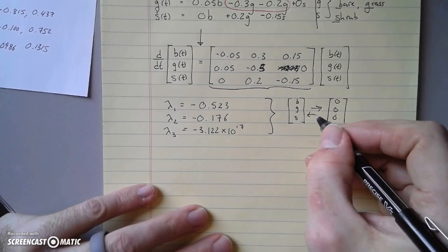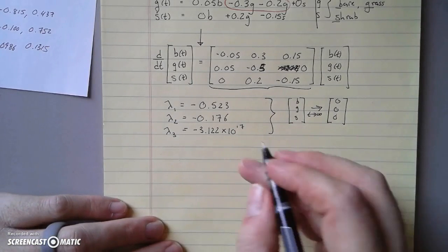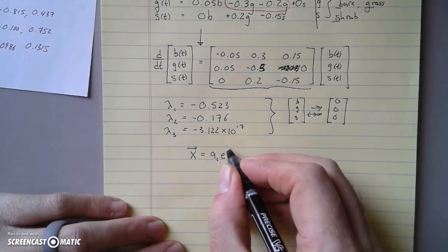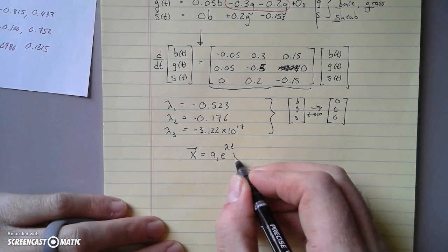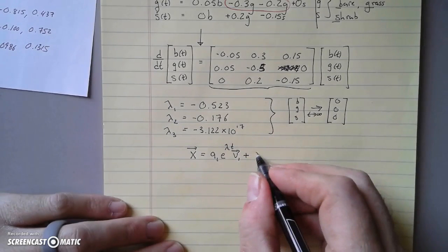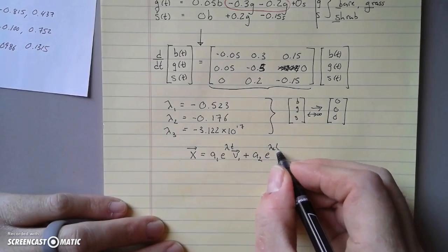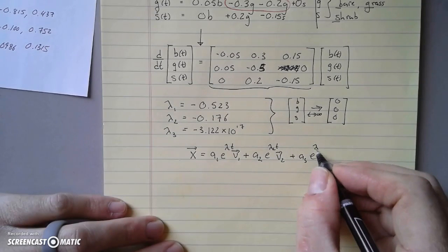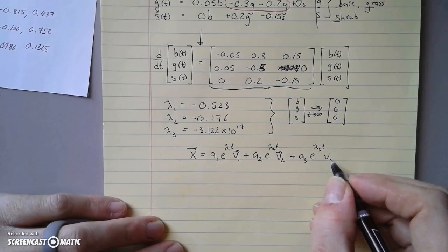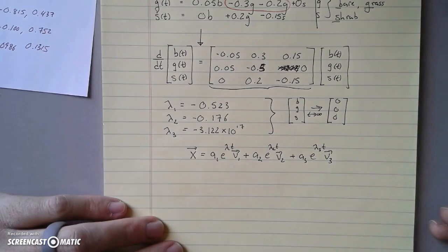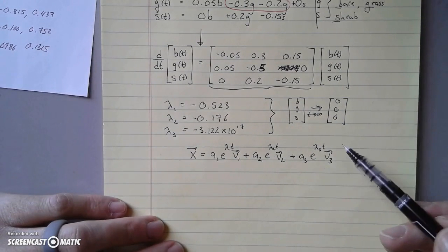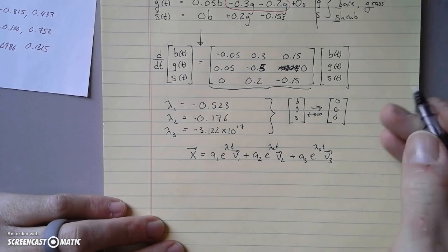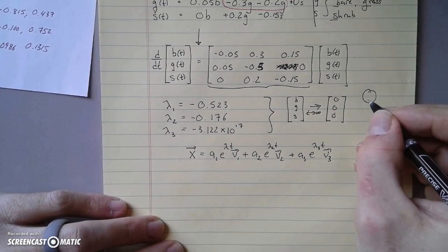Remember that the solution to a system of differential equations looks like this: a constant times an exponential with an eigenvalue times the corresponding eigenvector, another constant, another exponential, another eigenvector. If every one of these lambdas is negative, all of these would experience exponential decay. That should worry you.